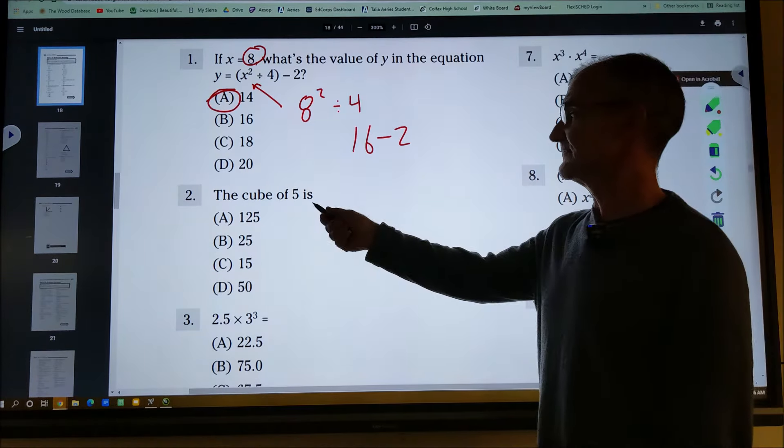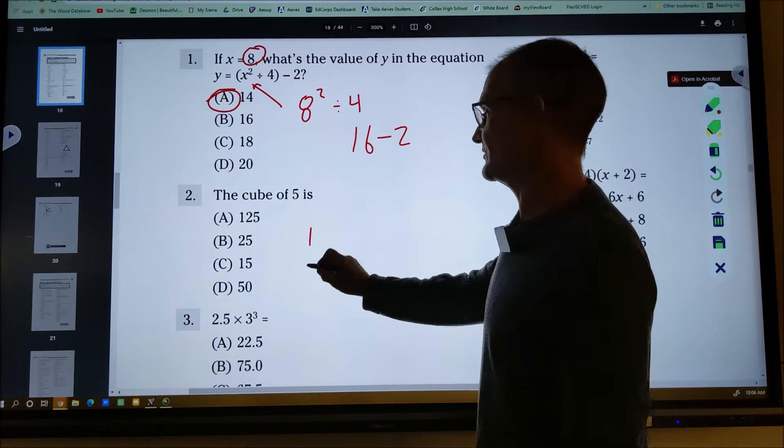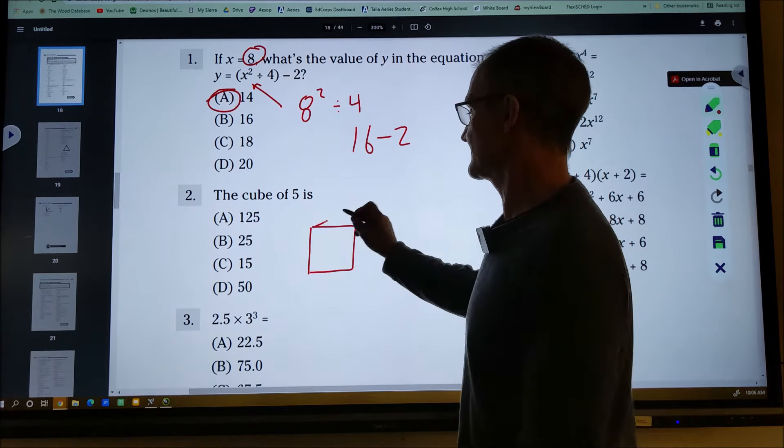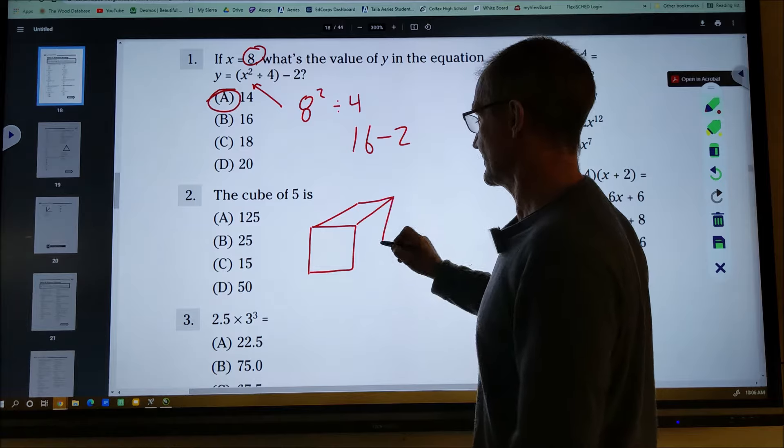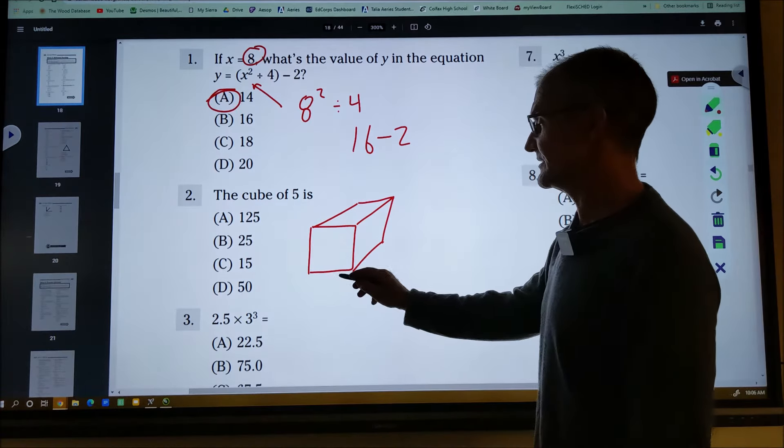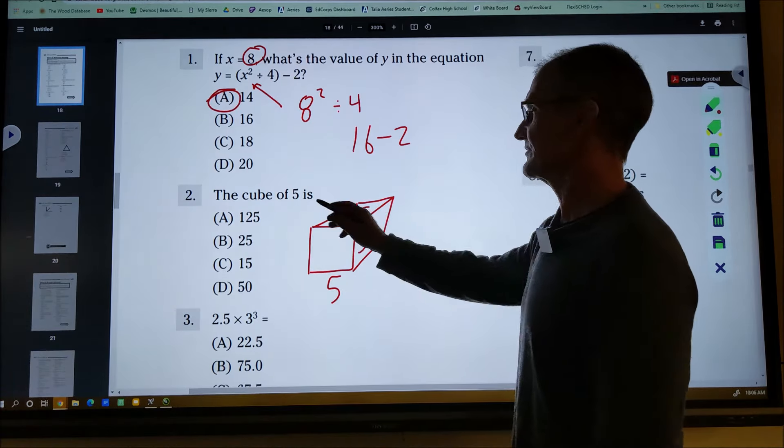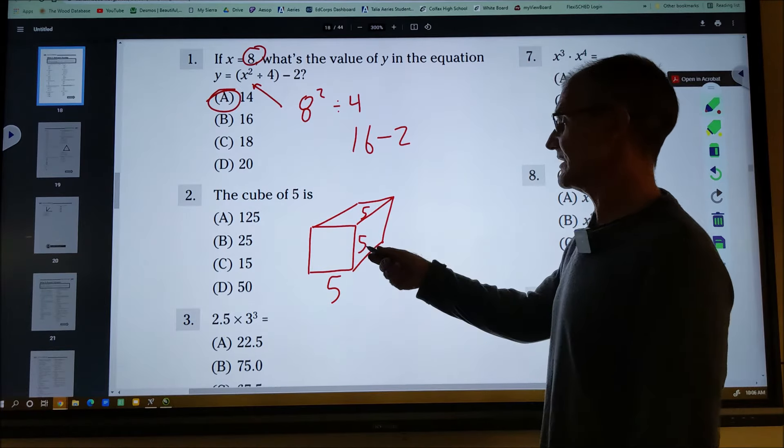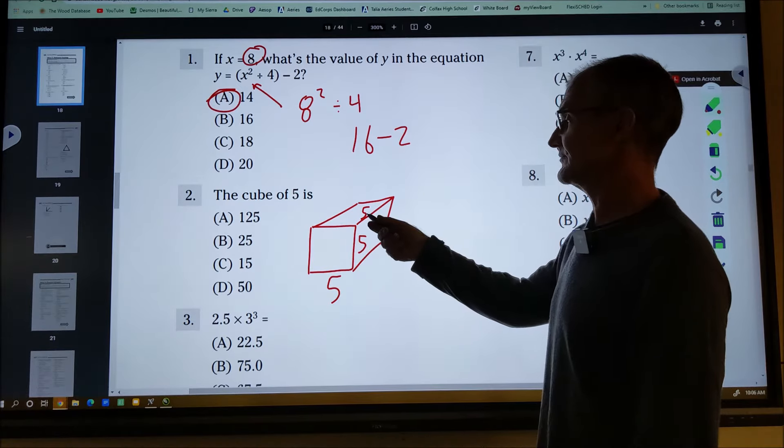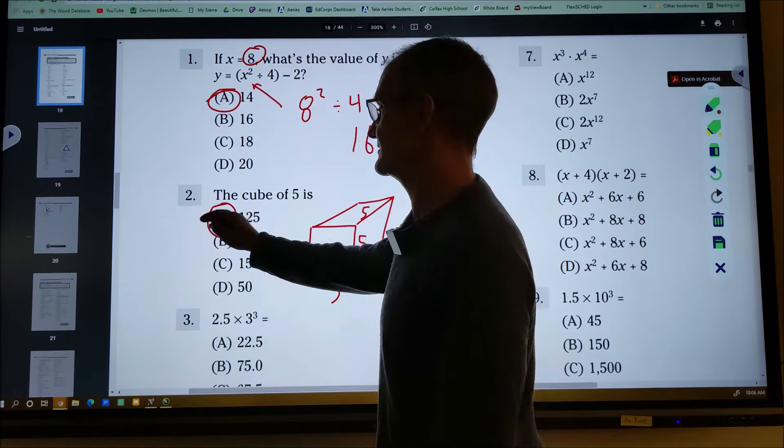The cube of five is, well, cube is a 3D object. It's going to have a height, a width, and a depth. Each one of these is five. So I think it's asking for the volume here. So five times five, 25 times five, 125. So answer two.